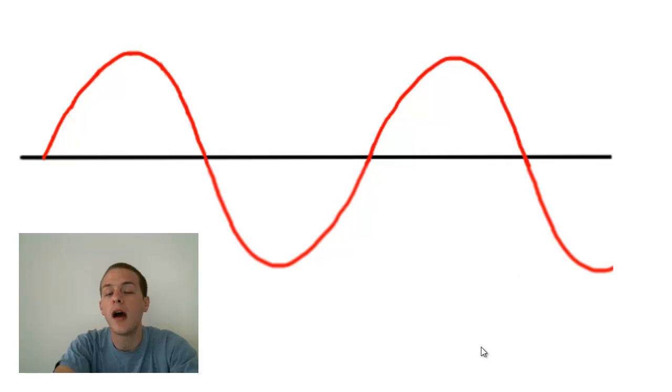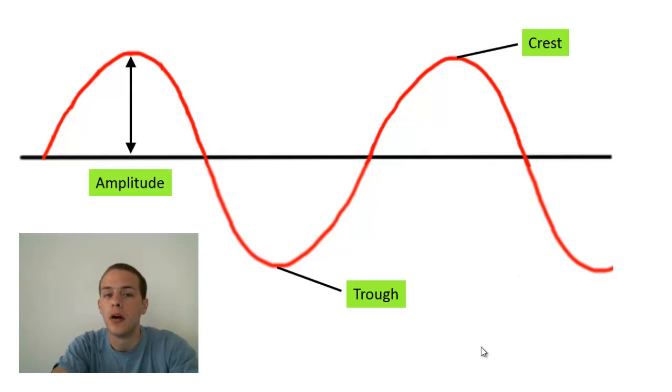So the very top part of a wave, that's what we call a crest of the wave. The very bottom part of the wave, that's often referred to as a trough. And the vertical height of a wave from the baseline to the crest, or alternatively from the depth from a baseline to the trough, that's what we call the amplitude of the wave. Now the amplitude of the wave is going to determine the intensity or the brightness of the light.